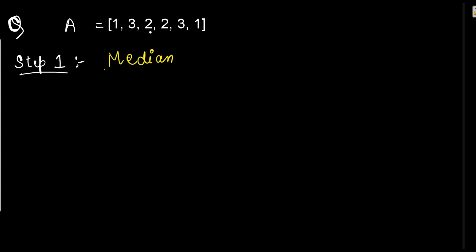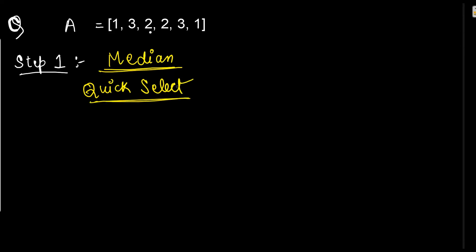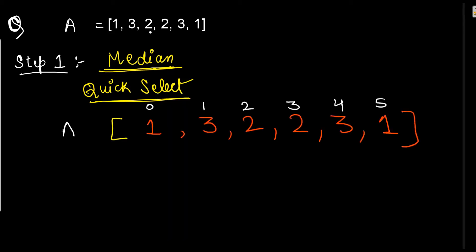Let's understand with an example. Here is our array in which we have to place elements so that it forms a wave. We can see there are duplicate elements — 1, 3, and 2 appear twice. Step 1 is to find the median of the array using quick select. I have already made a detailed video on quick select — the link is in the description. So let's find the median.